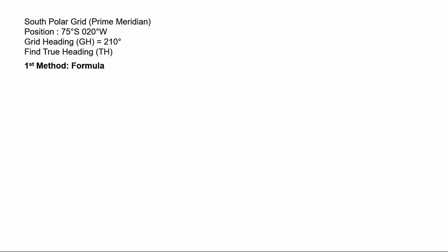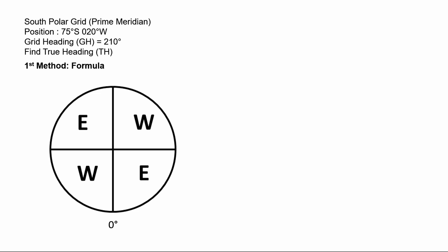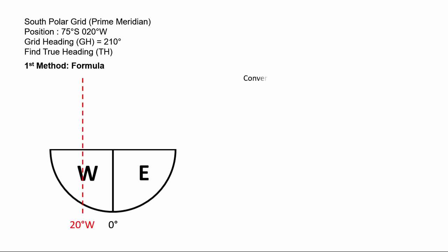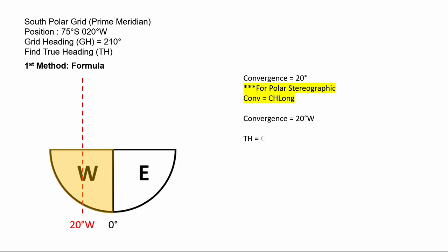For the first method using the formula, we need the EWWE diagram. Zero degrees — the prime meridian — is the reference meridian, so we mark the center line as zero degrees. The aircraft is in the southern hemisphere, so we use only the bottom portion. The aircraft is at 20 degrees west longitude, which is to the left of the prime meridian, so convergence is 20 degrees. For a polar stereographic chart, convergence equals change of longitude. From the EWWE diagram the aircraft lies in the west region, so convergence is 20 degrees west. The formula is: True heading = Grid heading ± convergence. Remembering the idiom 'convergence west, true west,' we add: True heading = 210 + 20 = 230 degrees.